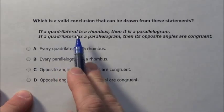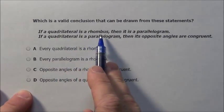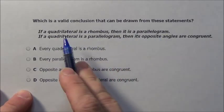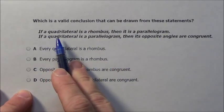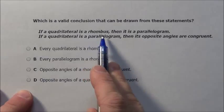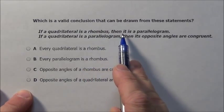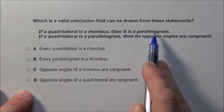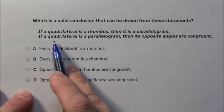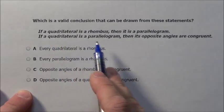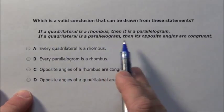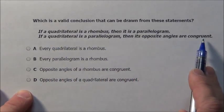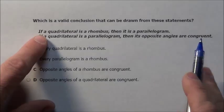It says, if a quadrilateral is a rhombus, then it is a parallelogram. If a quadrilateral is a parallelogram, then its opposite angles are congruent.